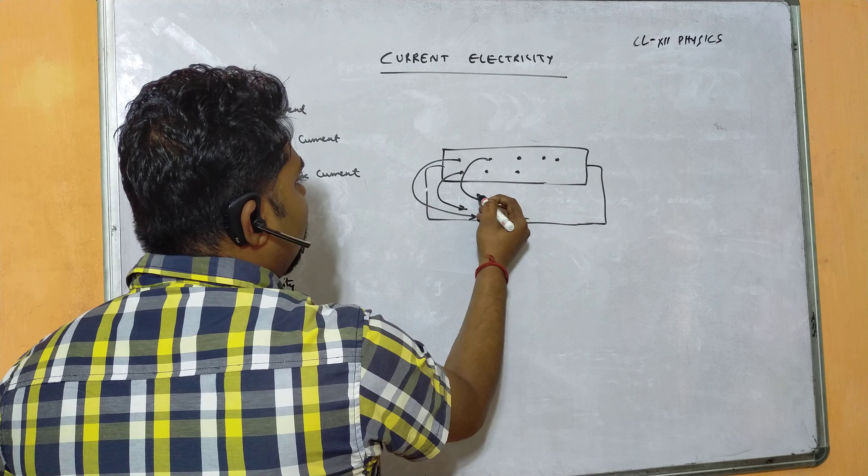On a V-I graph, current increases linearly with potential difference — giving a straight line, which is the Ohmic graph. However, for semiconductors and other non-Ohmic materials, the graph is non-linear.